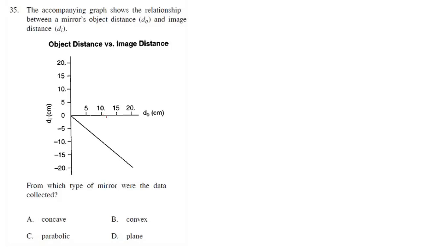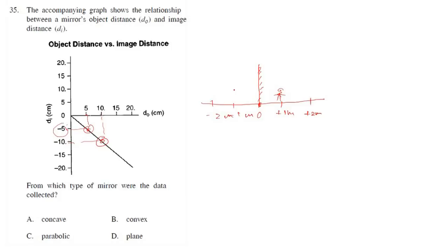In the last question, we discussed that object distance and image distance are the same — this is only possible in a plane mirror. Here it is shown as a negative reading because if you consider the mirror as a number line, if the object distance is plus 1, the image distance is minus 1 meter; if plus 2, then minus 2 meters. So the object and image are always at equal and opposite distances, which is why the graph goes into the fourth quadrant. This is only possible with a plane mirror. Hopefully you have understood all the questions — if you have any doubts, do comment in the comment section.